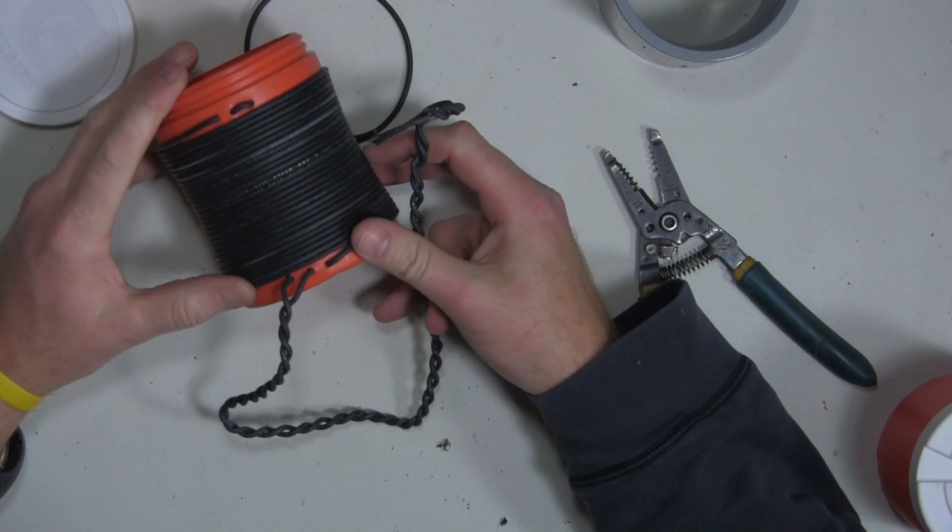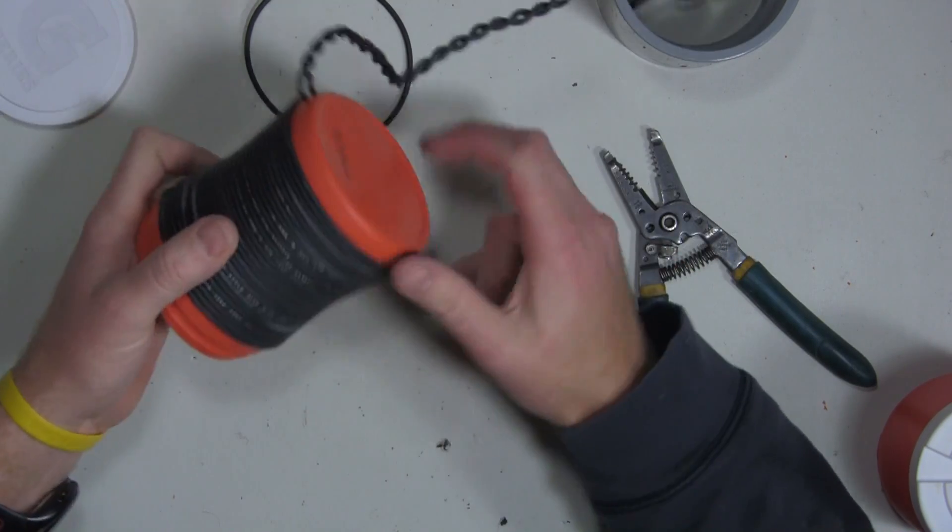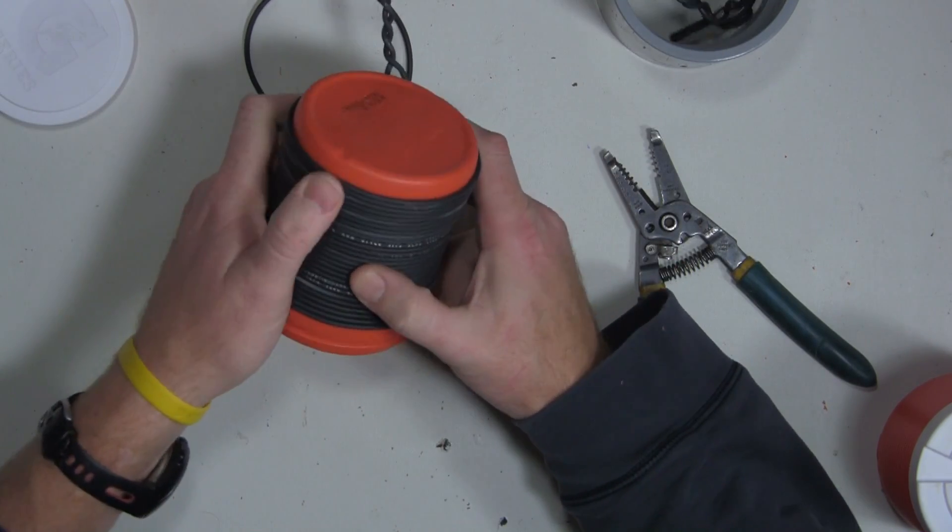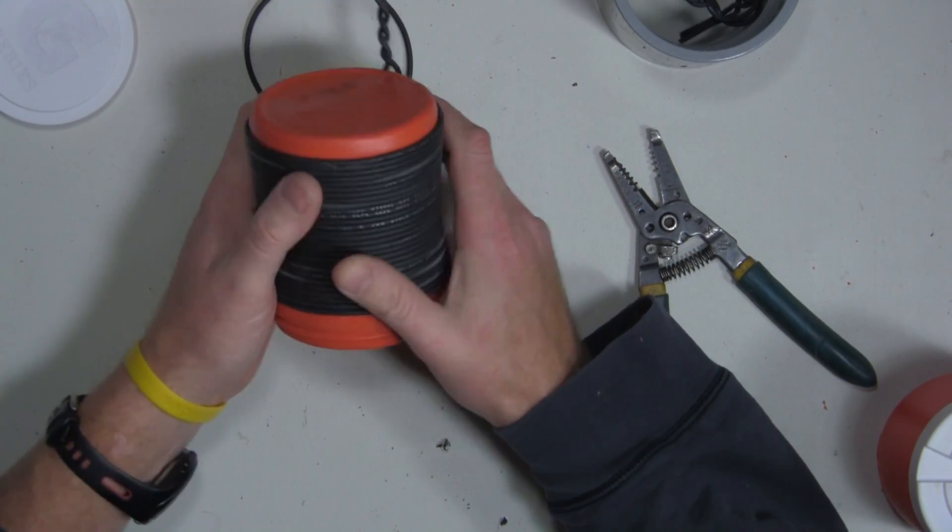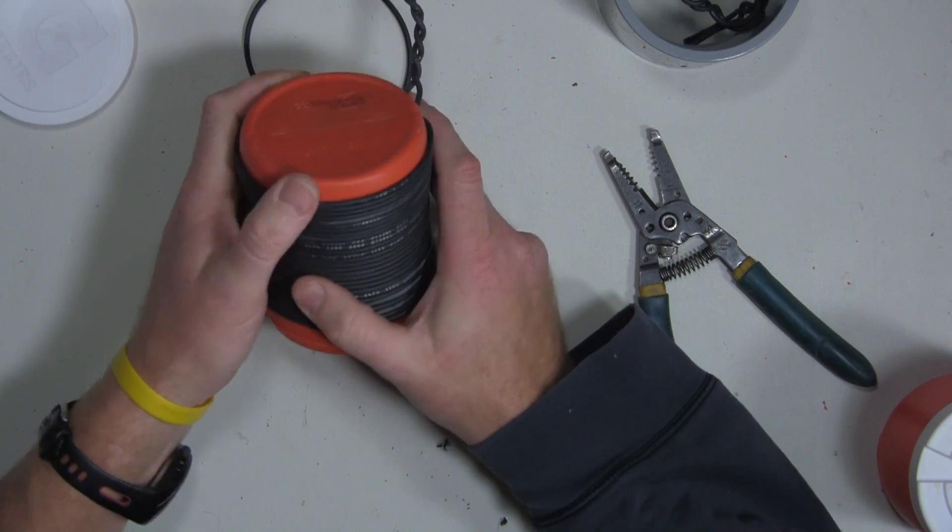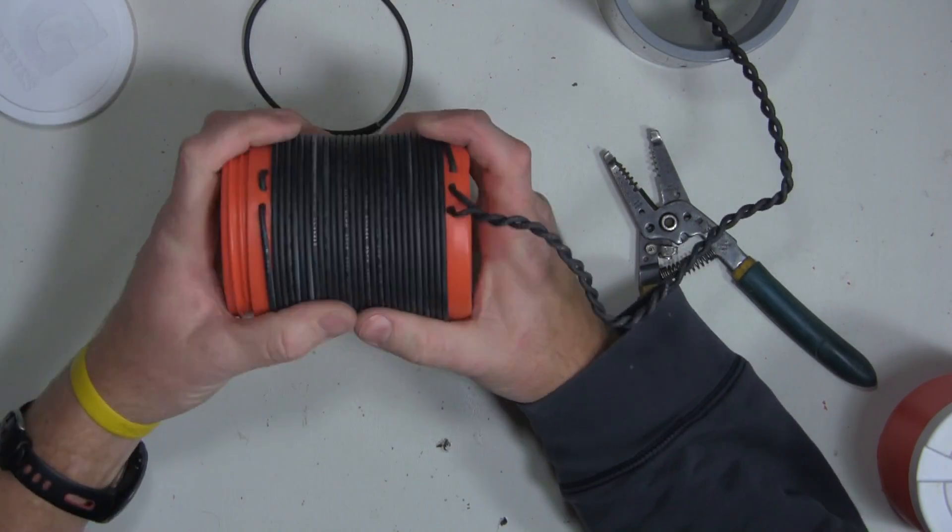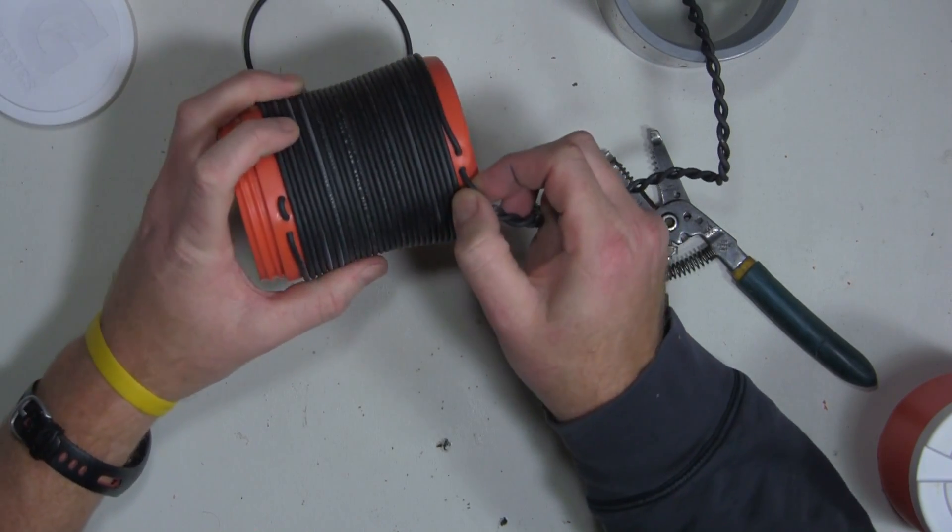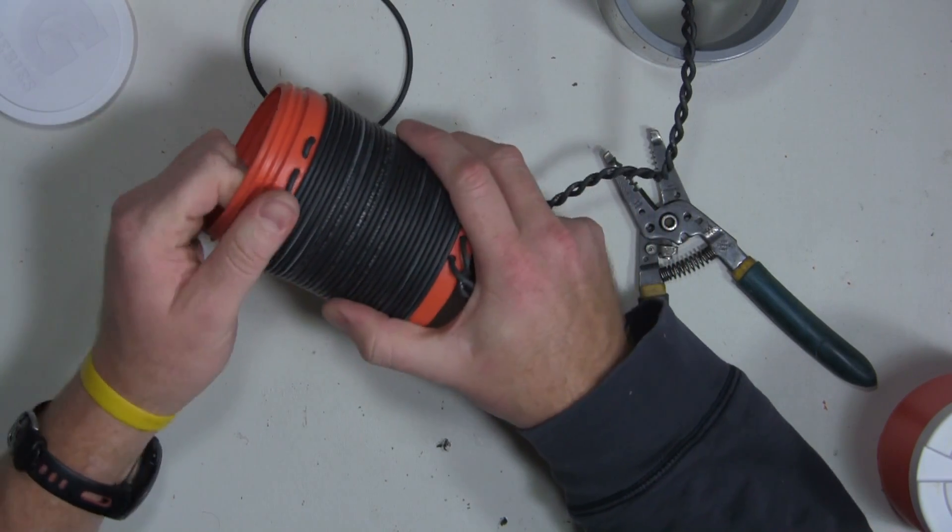Alright. So that's what the almost finished product looks like. And I got to say, that's actually on there pretty good. I don't want to test my luck by pushing that off of there. But you can always tighten it up just by pulling the excess down here and pulling the excess through up here.